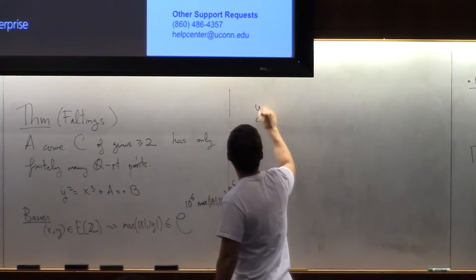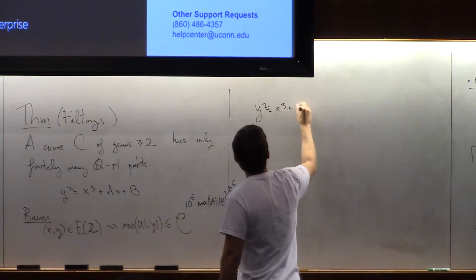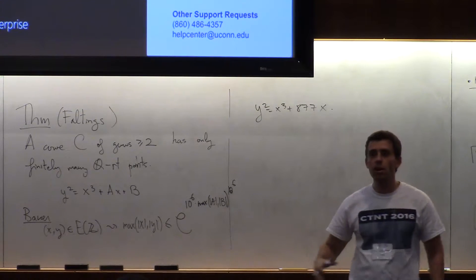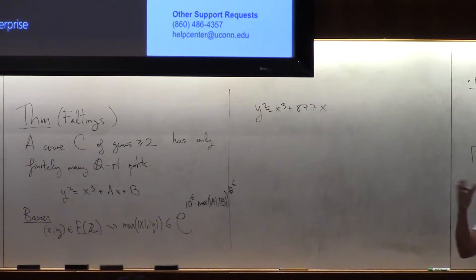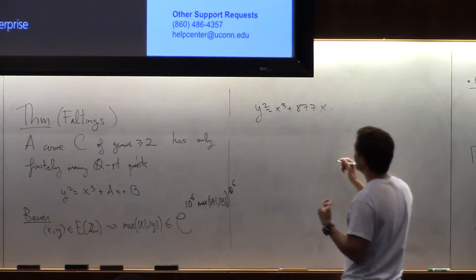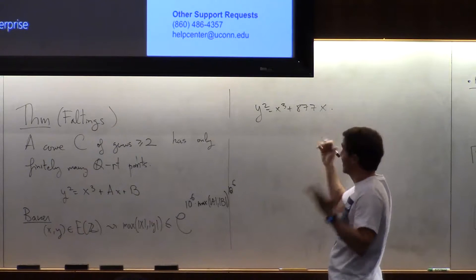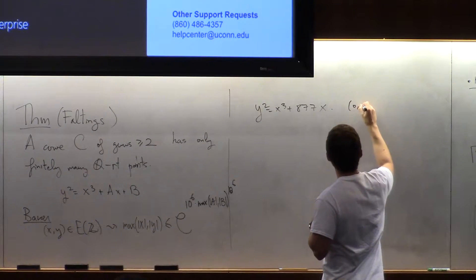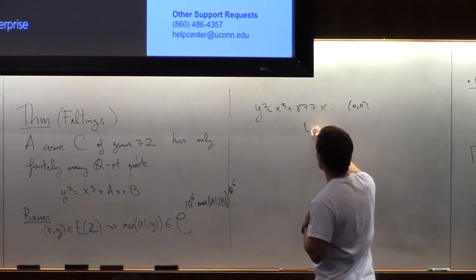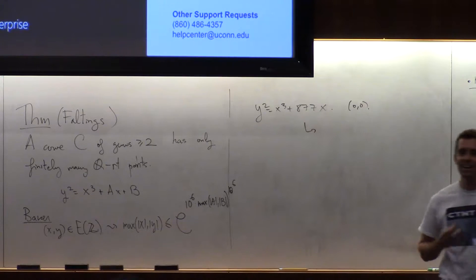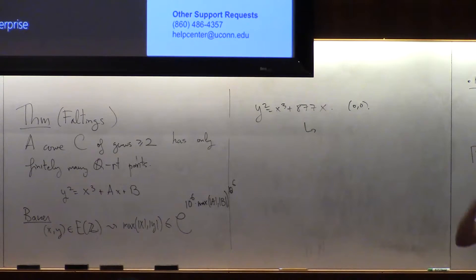If I remember correctly, this elliptic curve has the first solution has like zero, zero. It has two points. Zero, zero. And then beyond that, there is another, there is a generator of the points that are of infinite order.